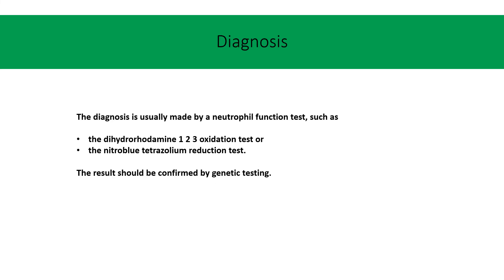The diagnosis is usually made by a neutrophil function test, such as the dihydrorhodamine 1-2-3 oxidation test or the nitro-blue tetrazolium reduction test. The results should be confirmed by genetic testing.